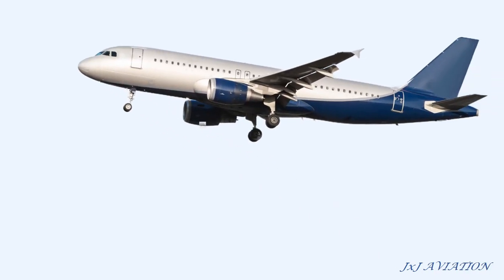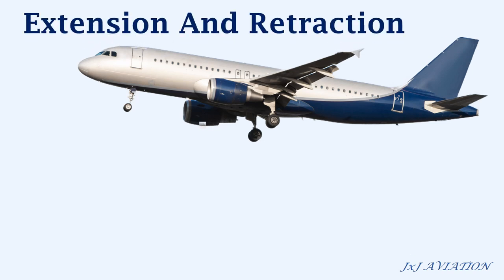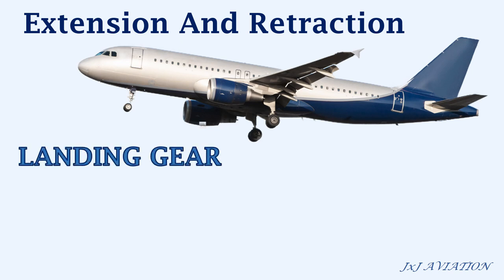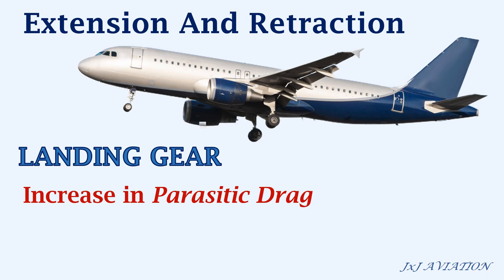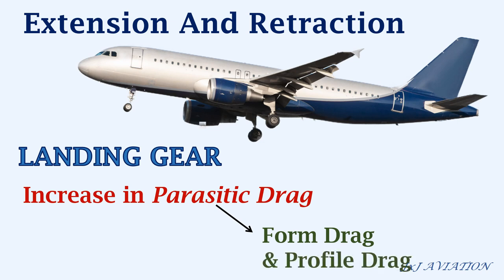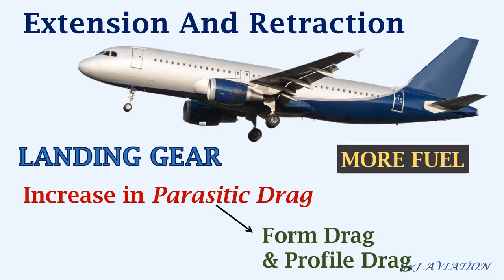First, let's understand why an extension and retraction system is required on the landing gear. If the landing gear is not retracted, it will cause an increase in the parasitic drag. The parasitic drag is a combination of form drag, or drag due to pressure difference, and the profile drag. An increase in drag means that more fuel will be consumed, which means more expenses. So to reduce the drag and the expenses, the extension retraction system is installed on the landing gear.